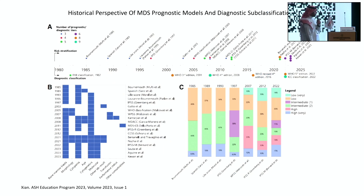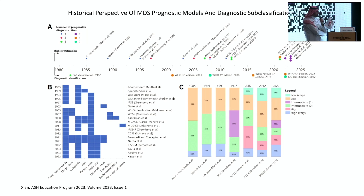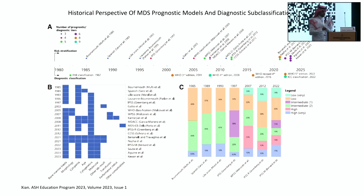Over the past decades there have been multiple scoring systems that helped to classify and risk stratify myelodysplastic syndrome. Ten years ago we had the IPSS-R that we had been using. However, ten years later we had the new IPSS-M, which adds molecular data into the equation. The IPSS-M is basically the IPSS-R with the addition of molecular data for a certain set of genes, and by incorporating that you are able to upgrade some intermediate and low-risk MDS into higher-risk MDS.